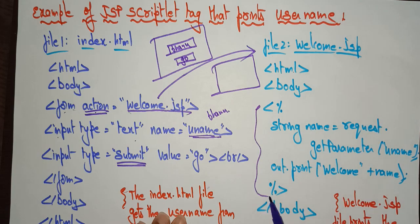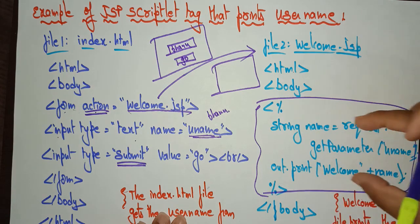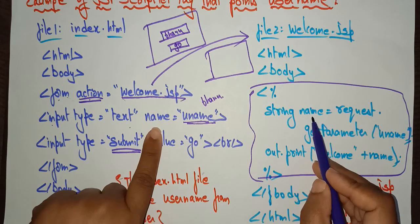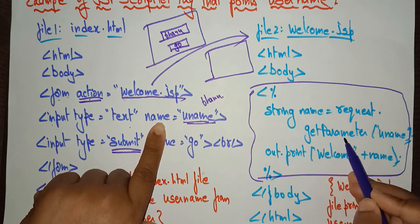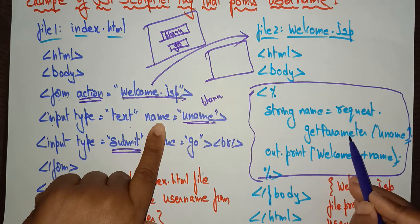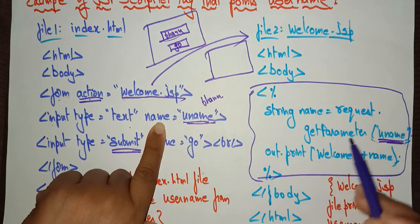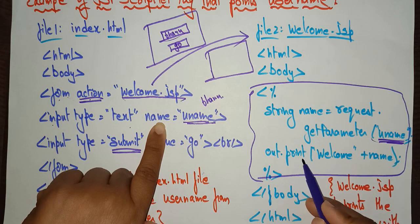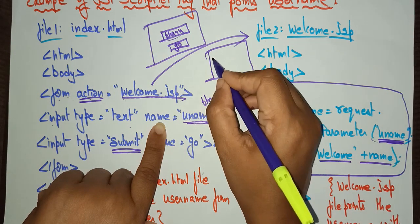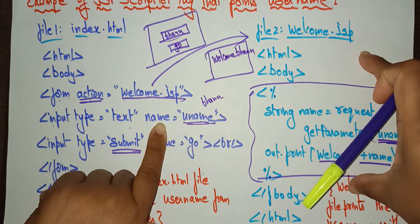In the welcome.jsp file, inside the HTML body, I am calling Java source code within a scriptlet tag. The Java source code is: String name = request.getParameter('uname'). This requests the parameter — whatever name I entered, such as 'Bhanu' — from the server. Then out.print('Welcome ' + name) is called, so 'Welcome Bhanu' will be printed on the screen.